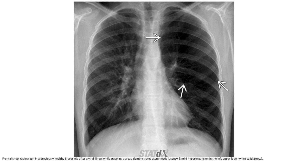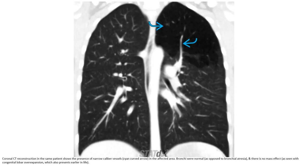Frontal chest radiograph in a previous case of a patient after a viral illness while traveling abroad demonstrates asymmetric lucency and air-trapping with hyper-expansion in the left upper lobe. Coronal CT reconstruction in the same patient shows narrow-caliber vessels in the affected area, with normal bronchi and no mass effect.